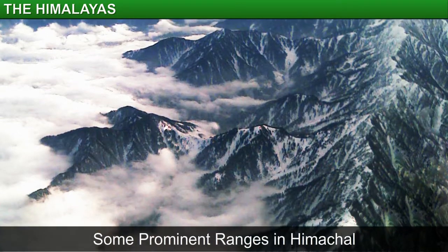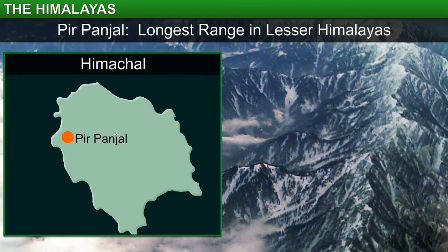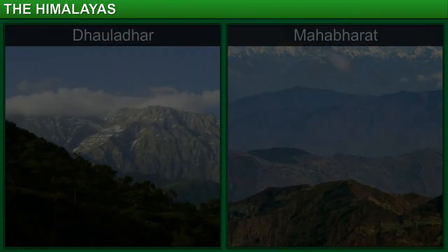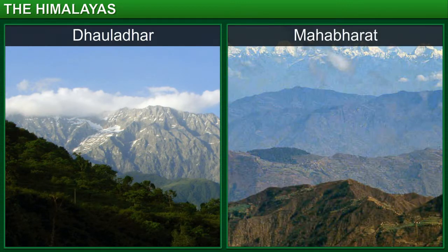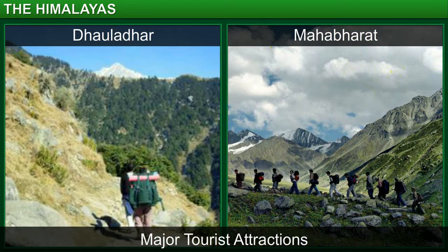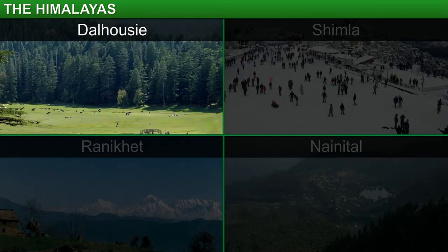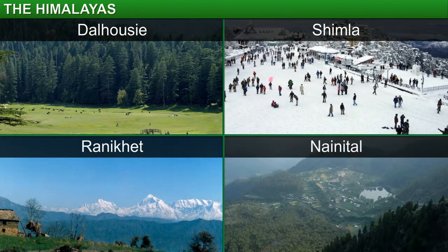Let us look at some of the prominent ranges in the Himachal. The Pir Panjal is the longest range in the Lesser Himalayas. The other notable ranges are the Dhaula Dhar and the Mahabharat. These ranges are famous for their beauty and are a major tourist attraction for people the world over. The Himachal range is also well known for its hill stations such as Dalhousie, Shimla, Ranikhet and Nainital.